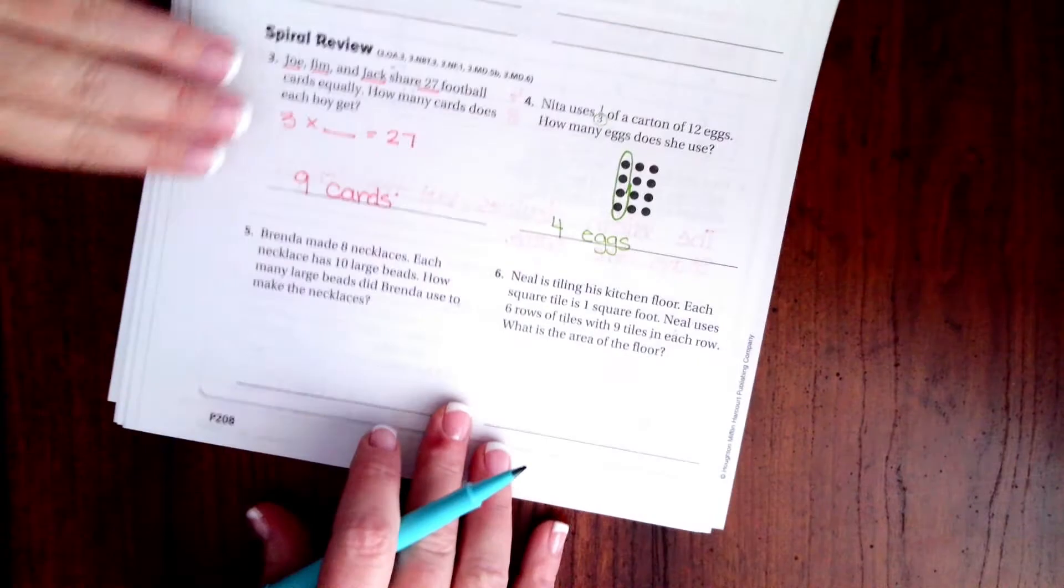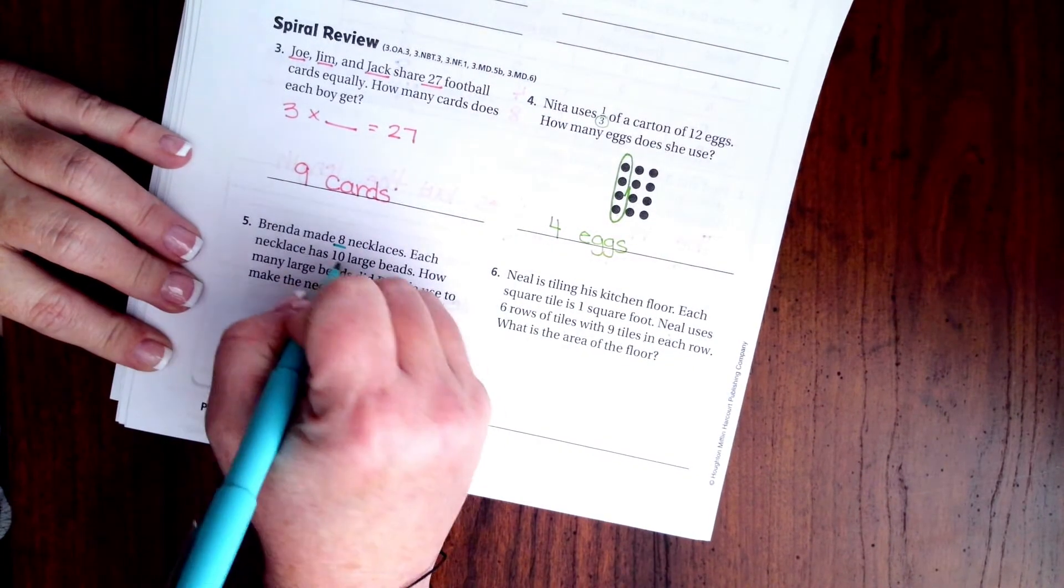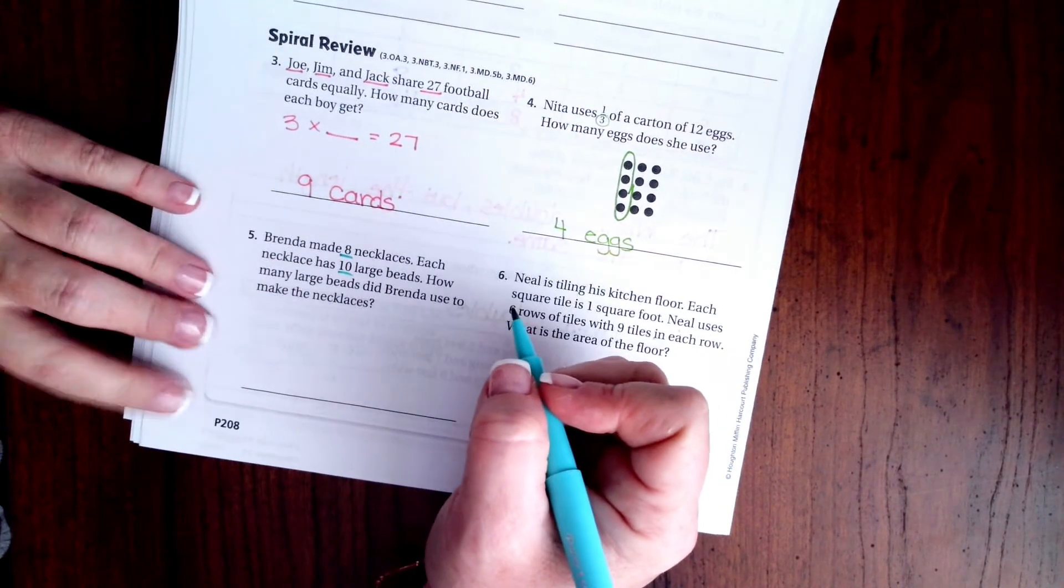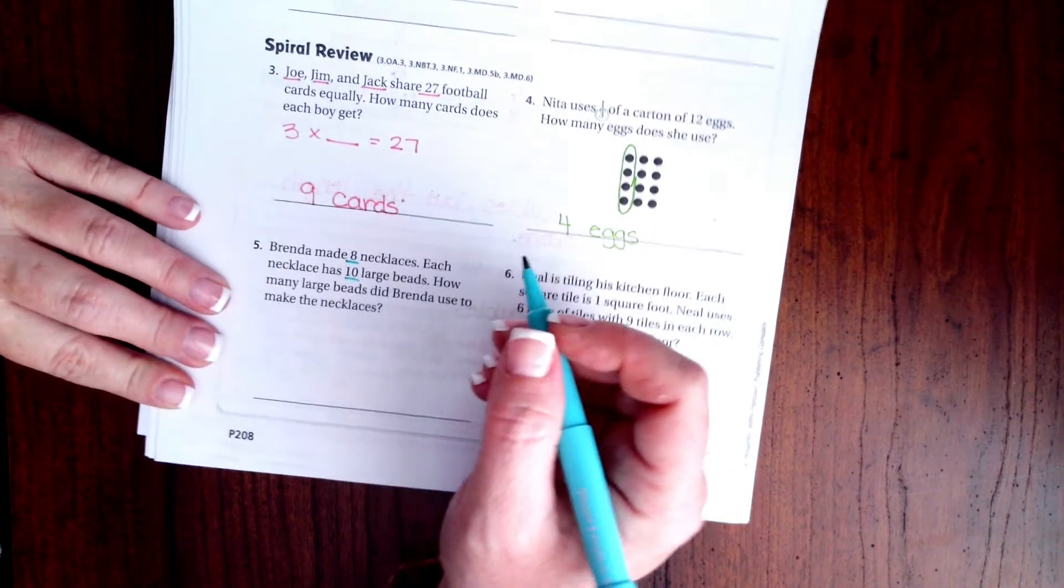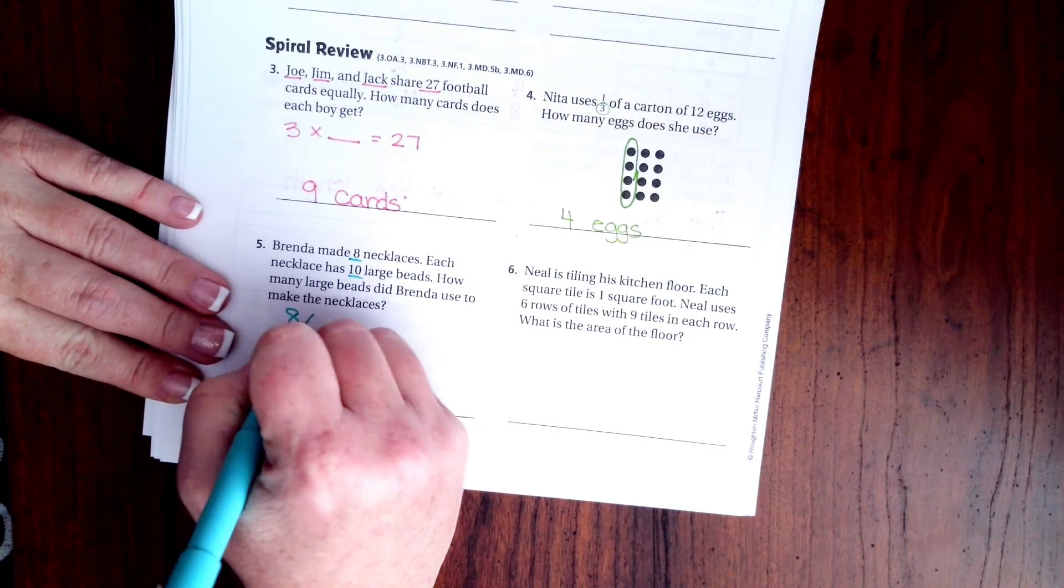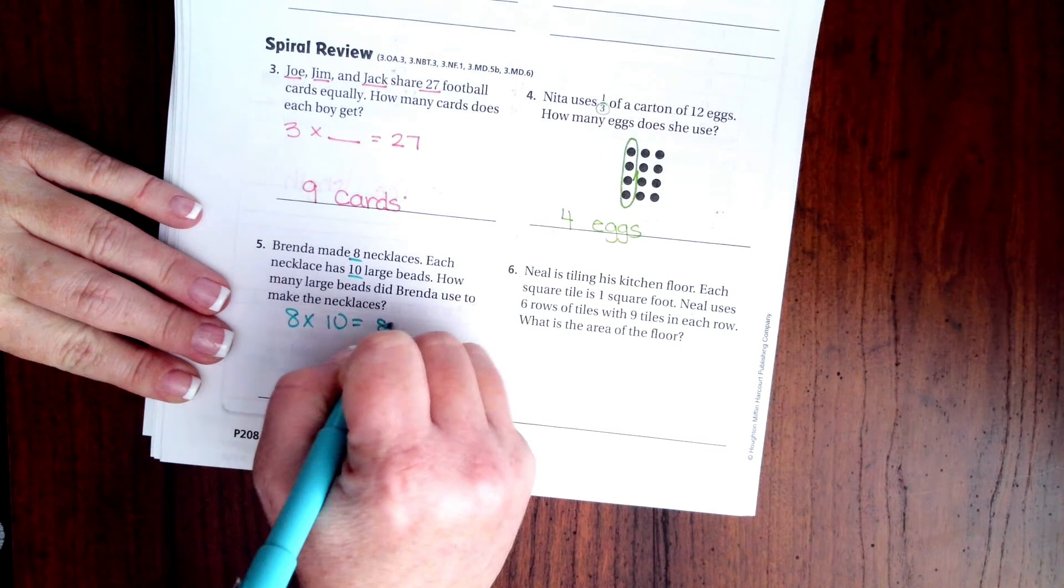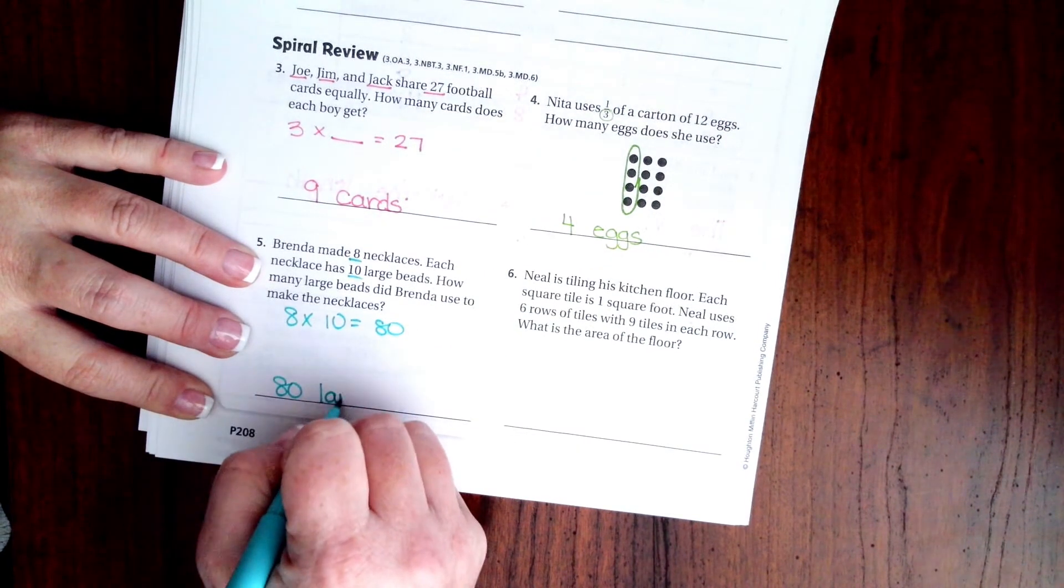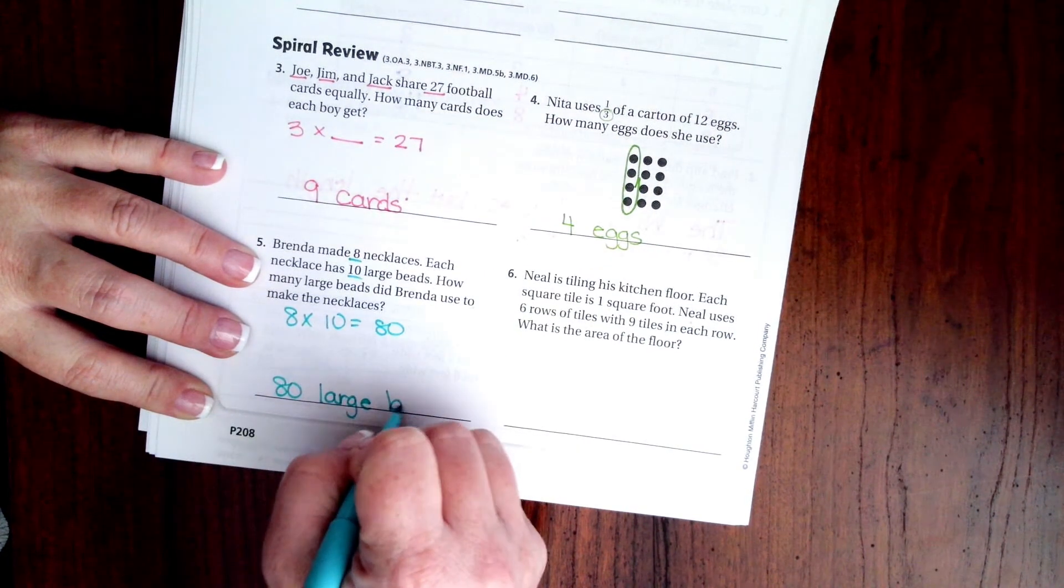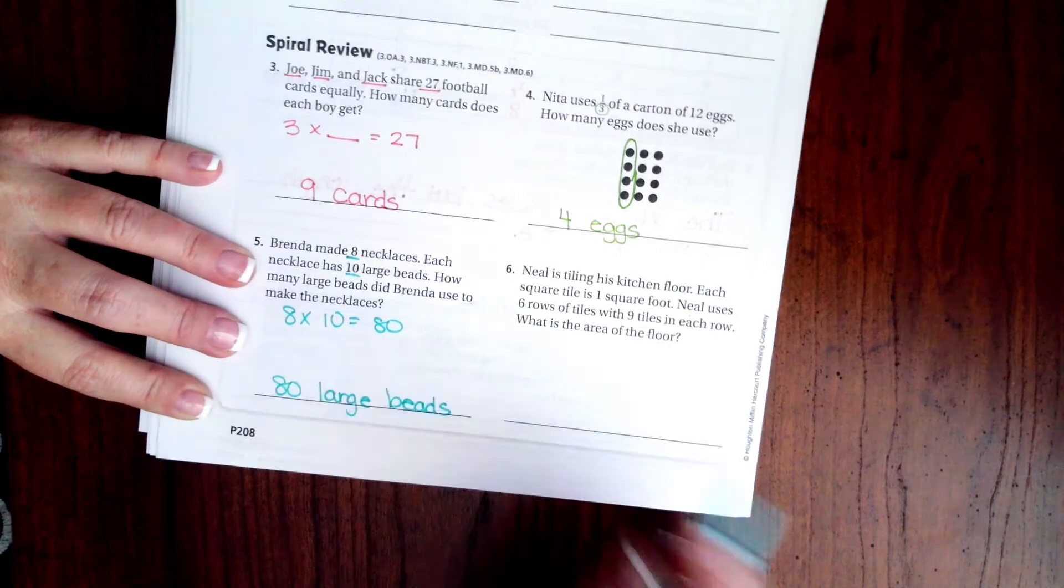Brenda made eight necklaces. Each necklace has ten large beads. How many large beads does Brenda use to make the necklaces? Well, eight times ten, that's just eighty. Eighty large beads. There we go.